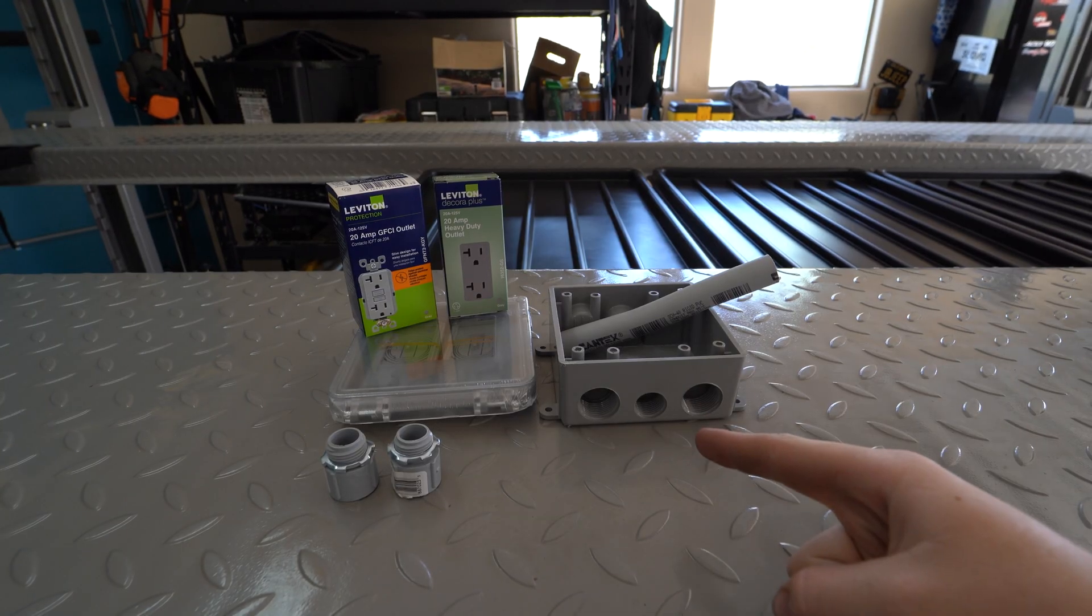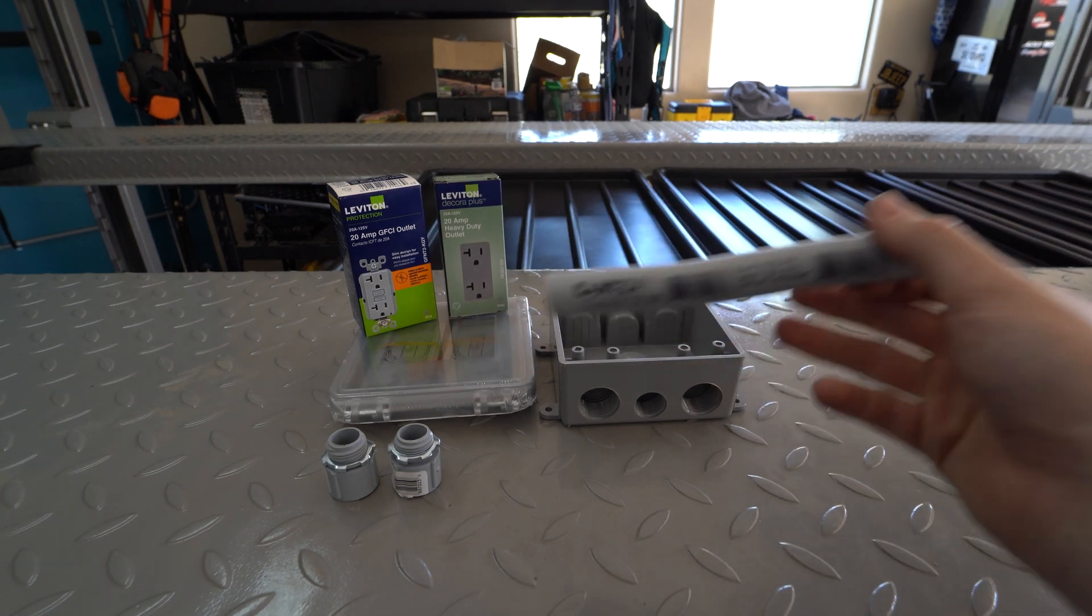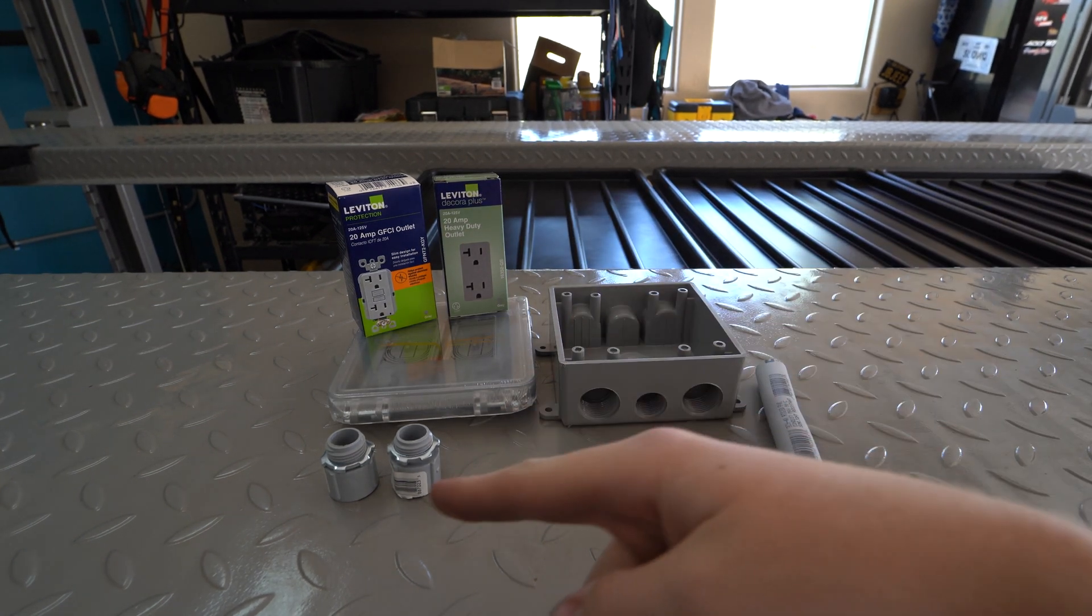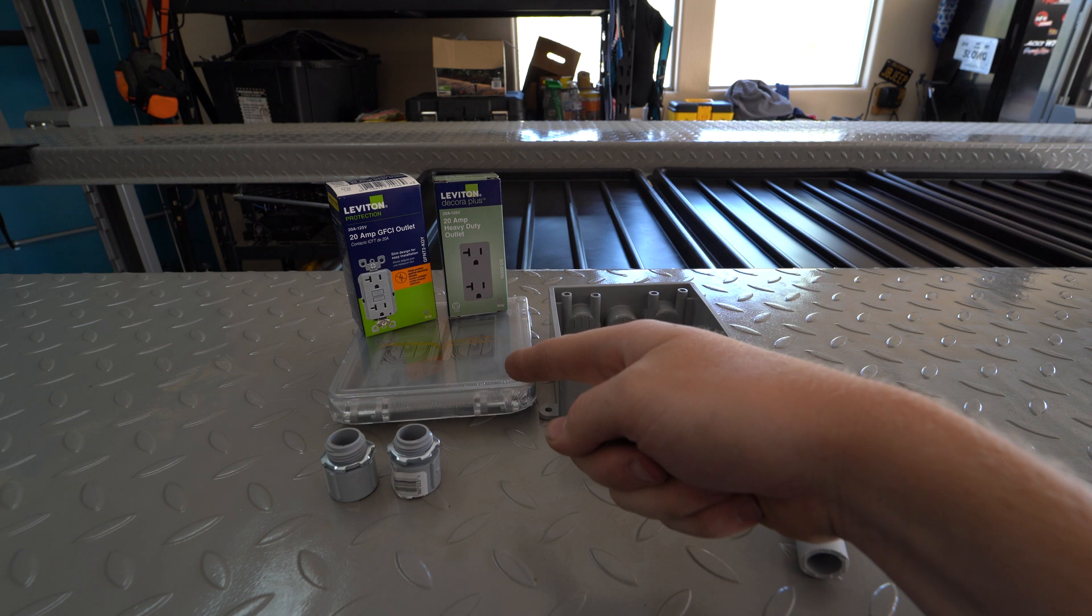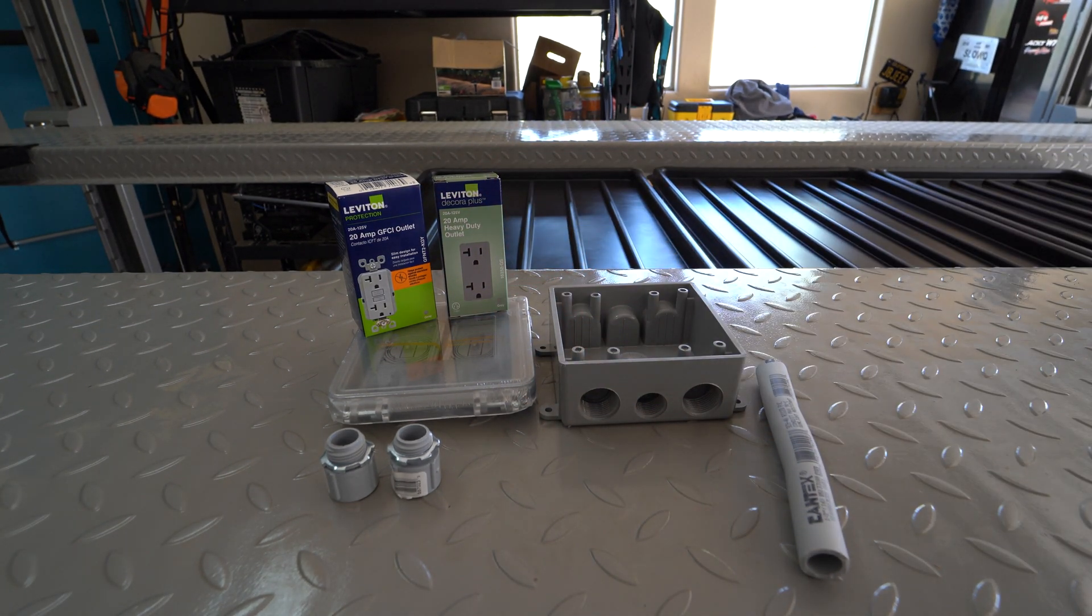On this other side I ended up using a plastic two-gang box instead of a metal one. I needed a piece of conduit to run into my existing electrical connection that goes to the breaker box so I got these two couplings as well as a cover, a 20 amp GFCI, and a regular receptacle.